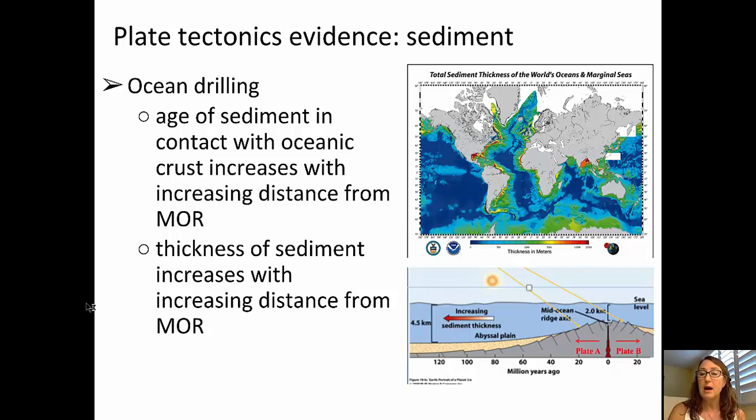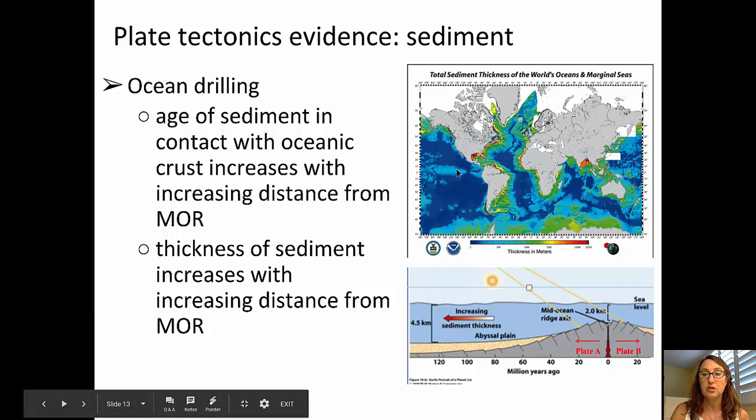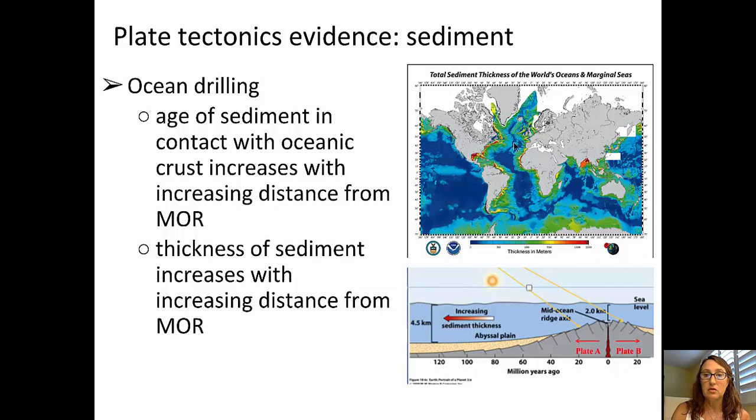So we can see in the top picture here, that's a map, it shows the thickness of sediment, and if you look at that very dark blue area here, especially in the Atlantic region, the dark blue area where sediment is thinnest is associated with the spreading center, or mid-ocean ridge.